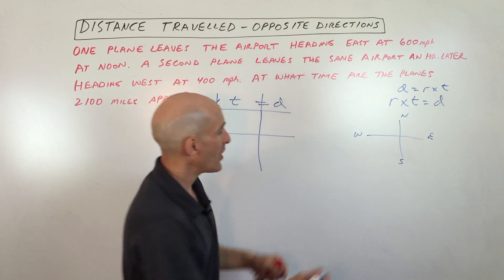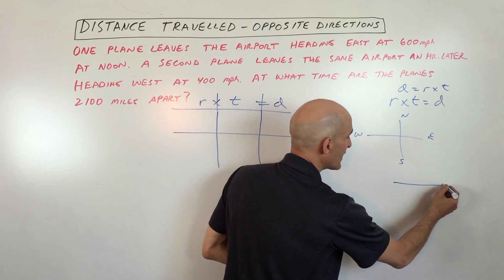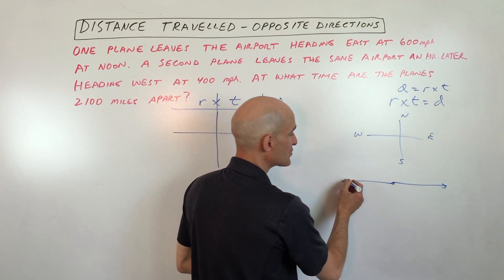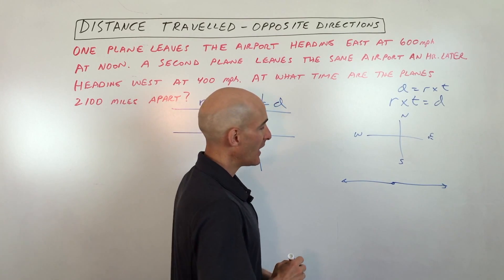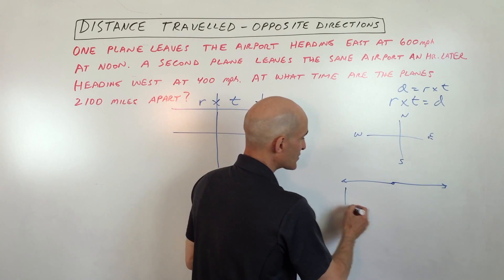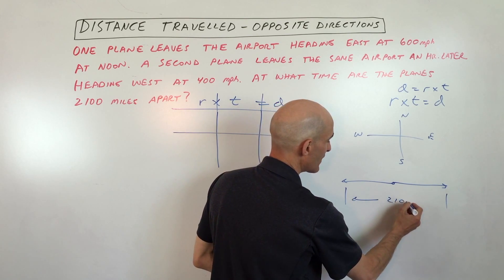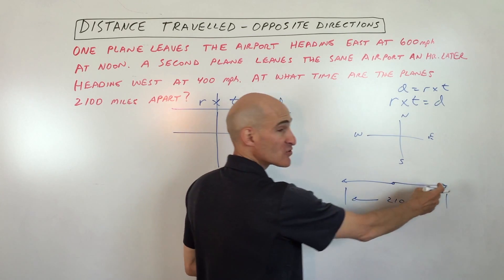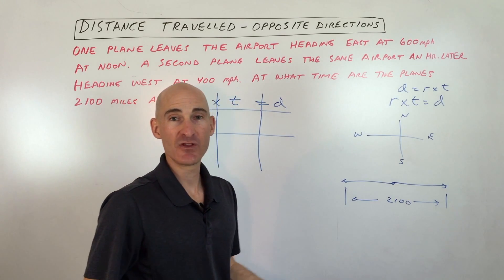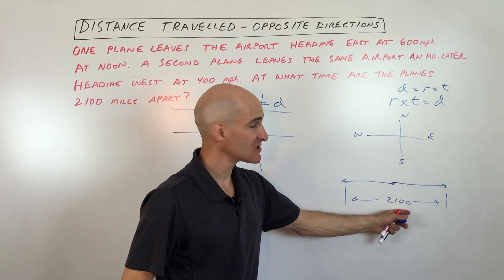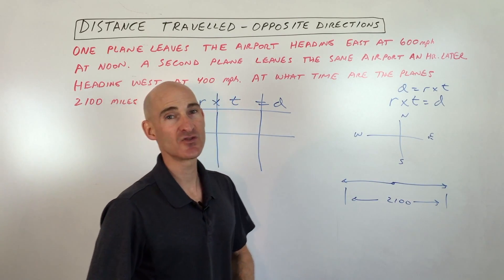So the first thing is you want to just draw a diagram. One plane is going this direction, one plane is going that direction, right? And obviously at a certain point they're going to be 2,100 miles apart. One might be traveling further than the other one, no problem, we're just going to add up the two distances together to get the total distance of 2,100.